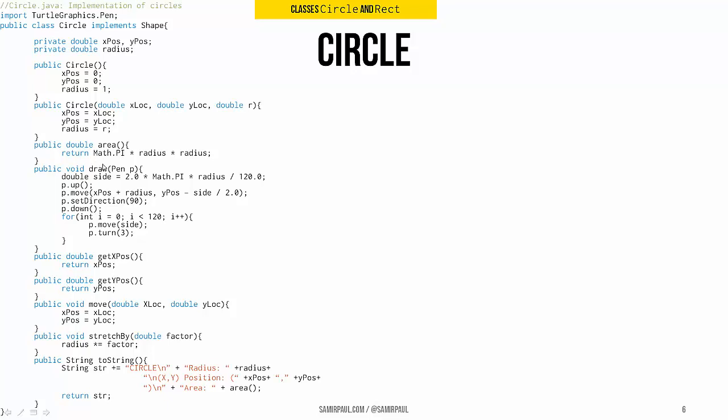We've got the area method, draw which takes a pen and actually draws it, get x position and get y position, move, stretch by, and to string. All of these are the methods of the shape interface. You can see here we also add instance variables: x position, y position, and radius.